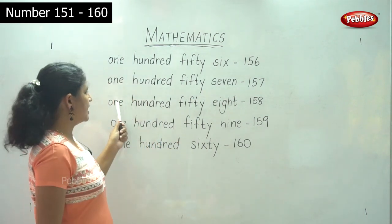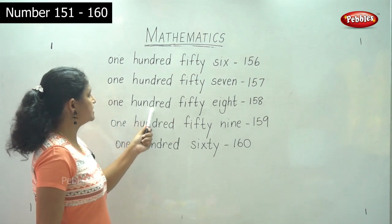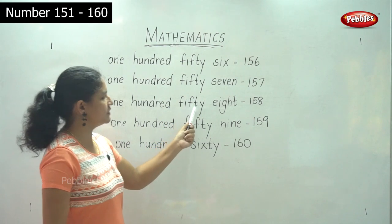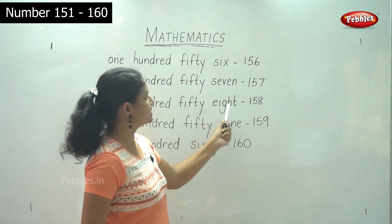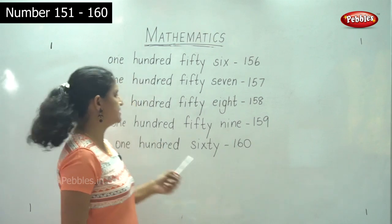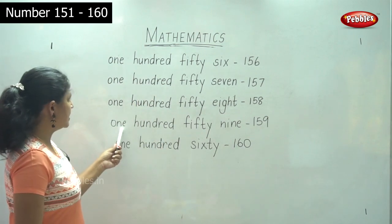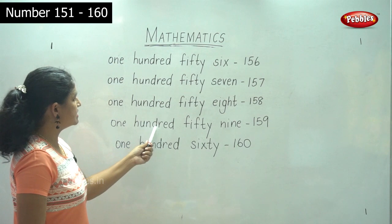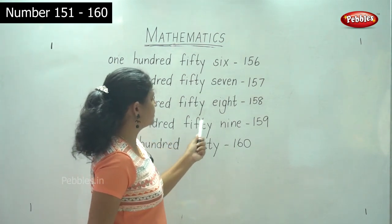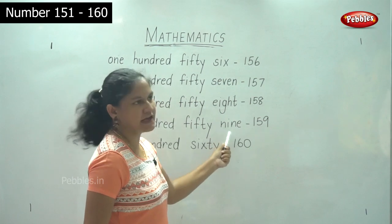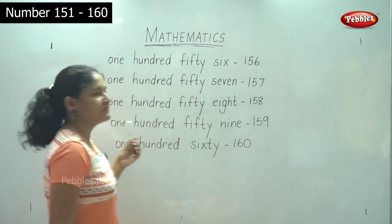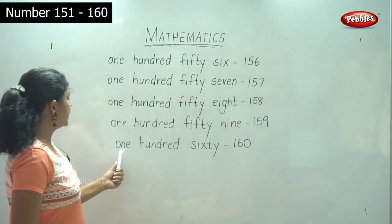O-N-E H-U-N-D-R-E-D F-I-F-T-Y E-I-G-H-T — 158. O-N-E H-U-N-D-R-E-D F-I-F-T-Y N-I-N-E — 159. And the last number O-N-E H-U-N-D-R-E-D.